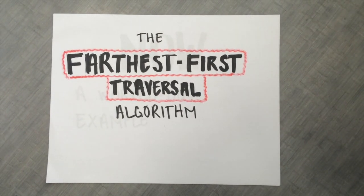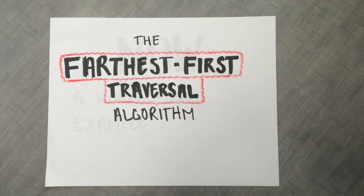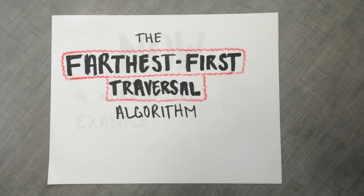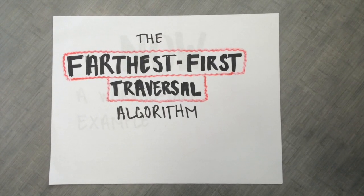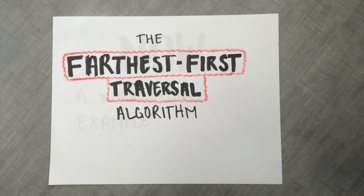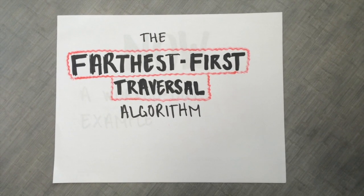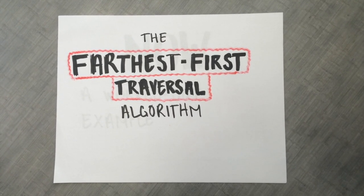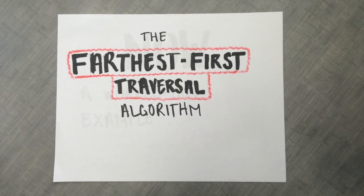We will introduce an approximation of the solution to the p-center problem. The approximation is referred to as the farthest point clustering algorithm, or the farthest first traversal, due to Gonzales in 1985. The algorithm is quite simple: pick any point from the set as one center, search for the farthest point from the remaining set as another center, and repeat the process until p centers are found. Each successive point is chosen as far as possible from all previously chosen centers.